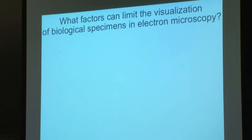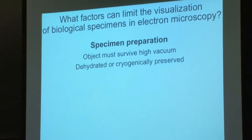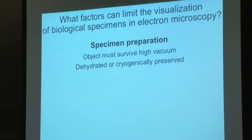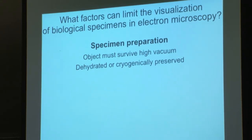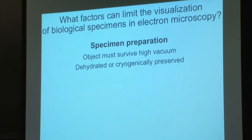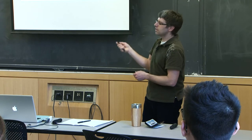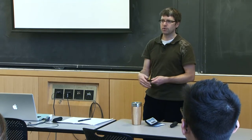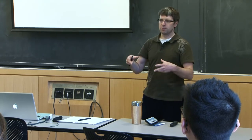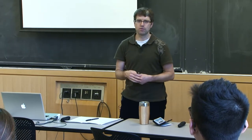Because electrons scatter strongly off matter, if you have gas in your column, electrons scatter off that before reaching your protein. So really good microscopes have really high vacuums, and the specimen has to be preserved to survive that. You wouldn't just put your protein in buffer and stick it in the microscope — basically all the buffer would evaporate and you'd have a dried-out protein. You need some way to either stain it, which is what we talk about in this paper, or cryogenically preserve it at liquid nitrogen temperatures while imaging.